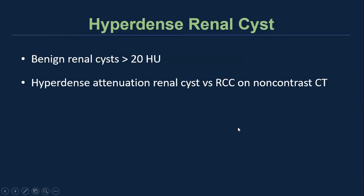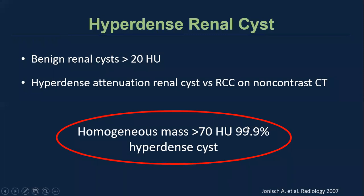The problem for us is: when we come across one of these lesions, how do we know if something is a hyperdense renal cyst or renal cell cancer if the lesion is seen on non-contrast CT? A paper published about 15 years ago addressed this challenge. The authors concluded that if we are dealing with a mass that is homogeneous and measures greater than 70 Hounsfield units on non-contrast CT, we are almost 100% certain we are dealing with a hyperdense renal cyst.